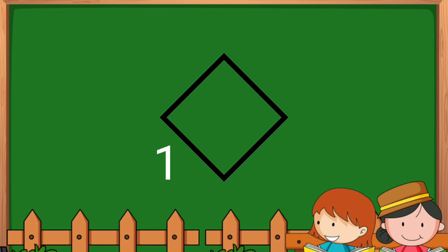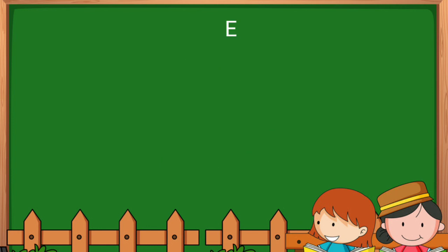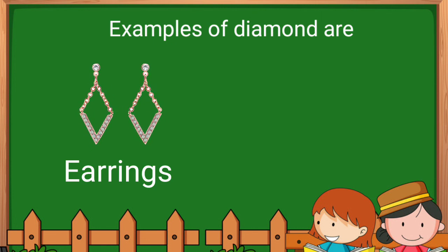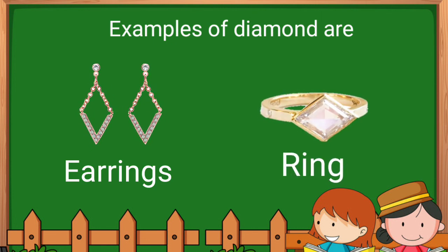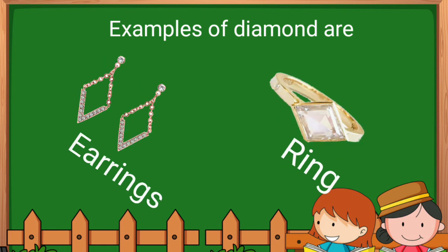Let's count: one, two, three, four - four sides. Examples of diamond are earrings, ring. These are examples of diamond.